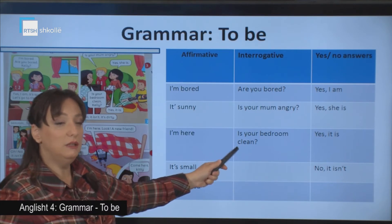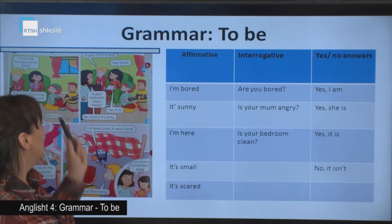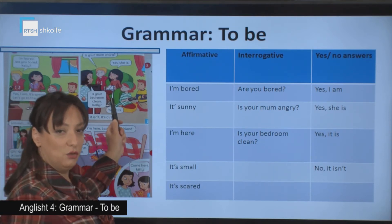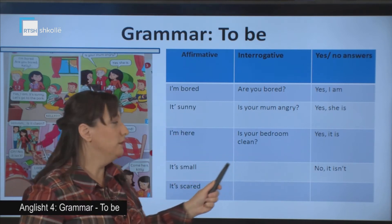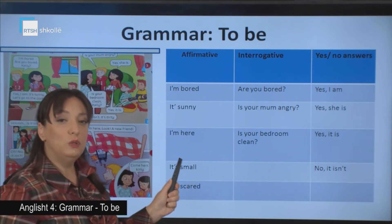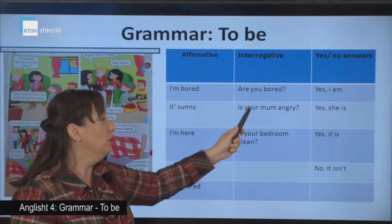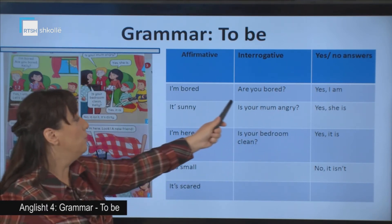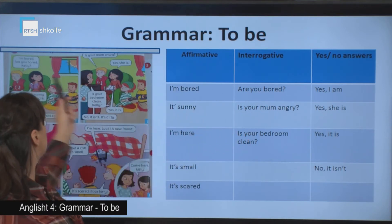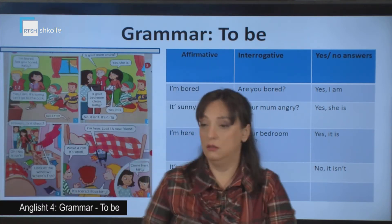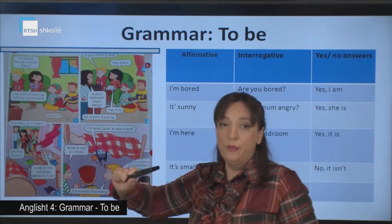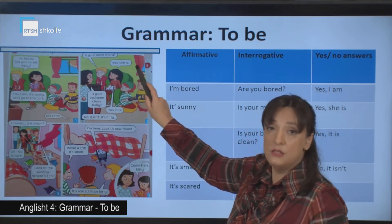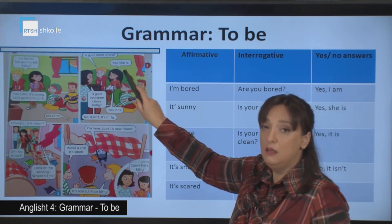'Is your bedroom clean?' Where is that in the text? 'Is your bedroom clean, Kelly?' In English, and in our case, questions are answered with yes or no. For example, 'Are you bored?' — 'Yes, I am.' Look at the text: 'Are you bored, Kelly? Yes, I am.' 'Yes, she is.' 'Is your mom angry? Yes, she is.'